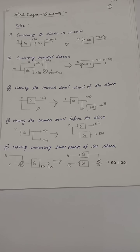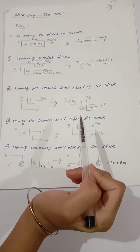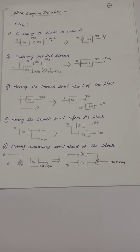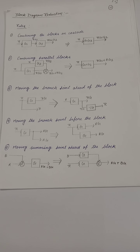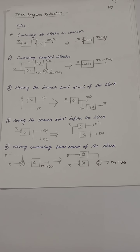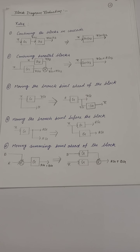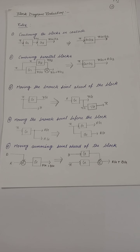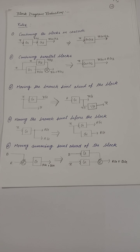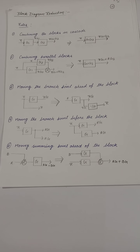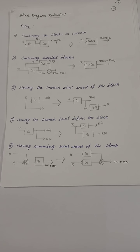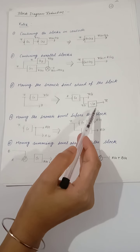When moving a branch point ahead of the block, you need to add an extra block in the path. Here you have a branch point and you need to add 1/G as the gain of that extra block. The gain of the extra block is the reverse of the actual gain, so that the output remains R.